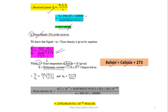K is the Boltzmann constant, given as 1.38 × 10⁻²³ Joules per Kelvin. After substituting all values, we can calculate the noise density at the receiver. The noise density has units of Watts per Hertz.